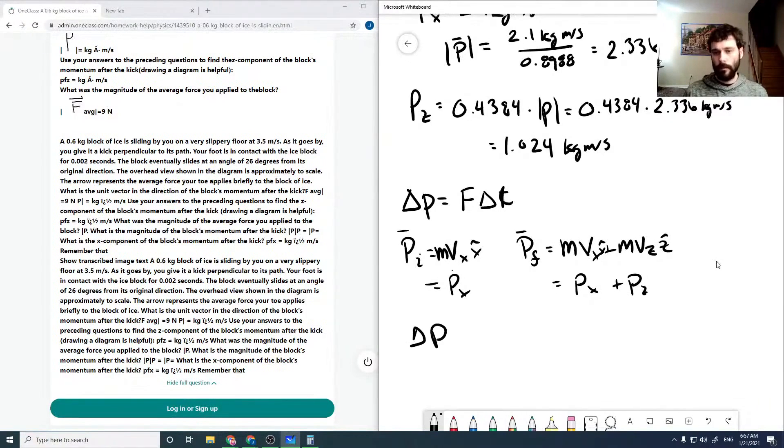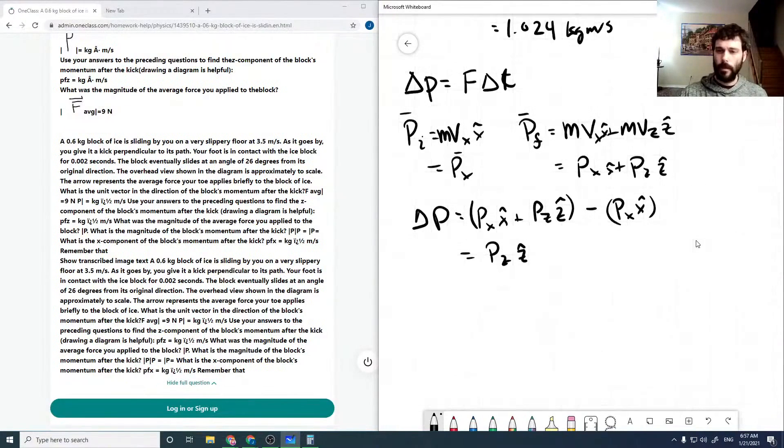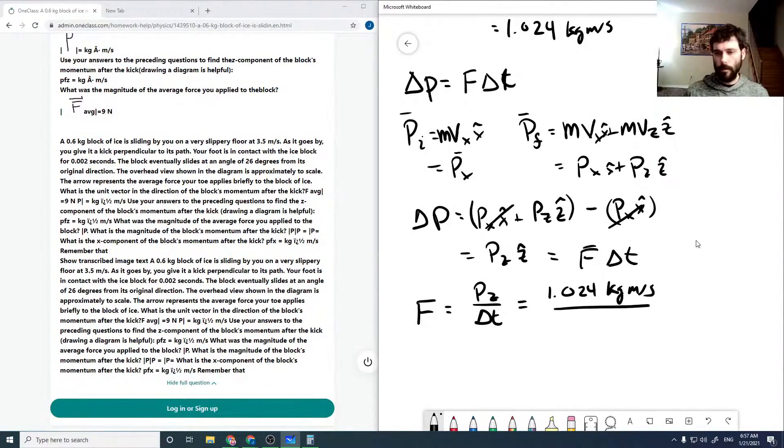So our delta p then is just px x hat plus pz z hat minus px x hat, which just comes up to be pz z hat, as the x here will cancel. And so then that equals our F delta t, and so then our F is just pz over delta t, which is our 1.024 kilograms meters per second over a delta t which was given as 0.002 seconds.